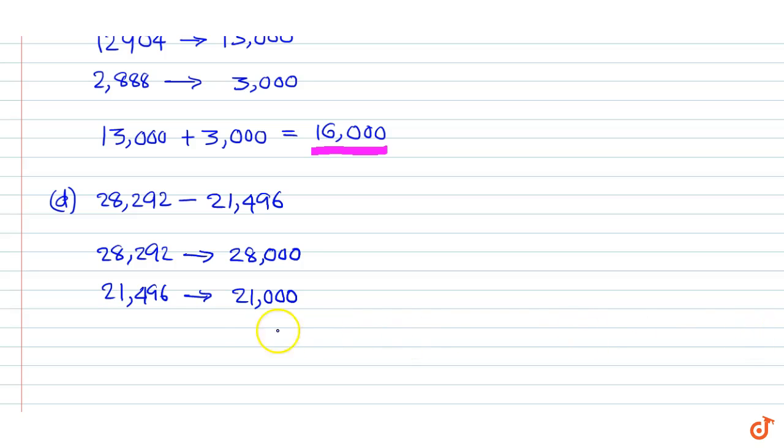Therefore, our answer is 28000 minus 21000 is equal to 7000.